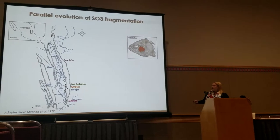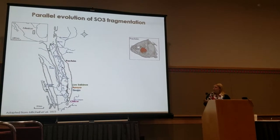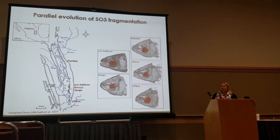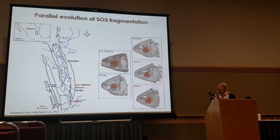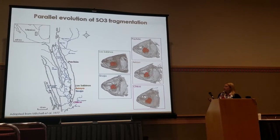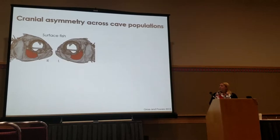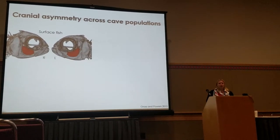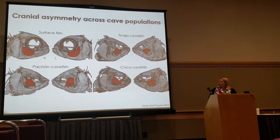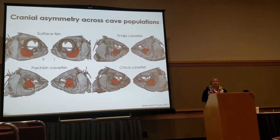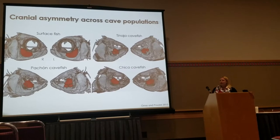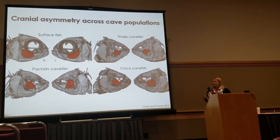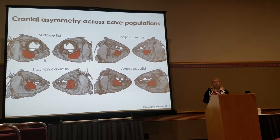Across the landscape of Mexico in the mountain ranges where we find multiple caves, as you go from north to south, even very geologically and biogenetically distinct cave populations show this SO3 fragmentation. In surface fish, the SO3s are symmetrical in shape and size on both left and right sides. But in multiple cave fish populations, the bones are not only fragmented but also asymmetric — you can see varying numbers of bones on each side of the face. This is happening over and over again across populations.